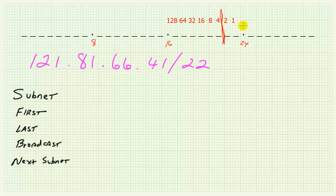Everything to the right of this line is host bits, and everything to the left is network and subnetwork bits. If you remember our color coding from prior examples, from this line to the right it would all be green, and from this line to the left some would be yellow — we don't know exactly where because we don't know what we started with before the slash 22. Maybe we were given a slash 12 and subnetted further to get a slash 22. We don't know and it doesn't matter.